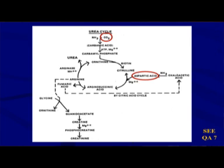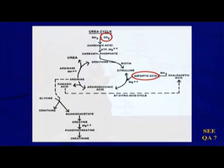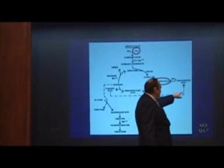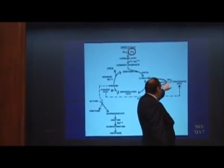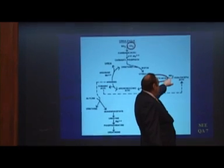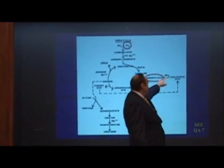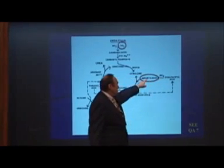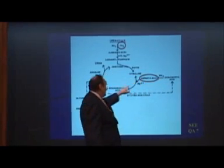Arginosuccinic acid then gives off a fumaric acid. And look what happens here — arginosuccinic acid gives off a fumaric acid, and by the citric acid cycle, the fumaric acid goes back around to oxaloacetic acid.